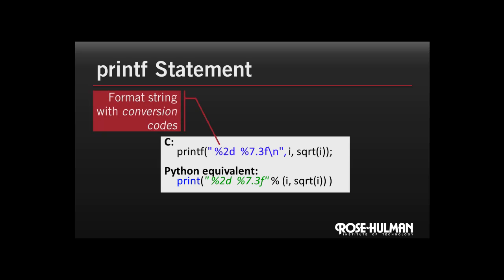Inside that format string, we have conversion codes. So this says I want a two character integer. And then the second conversion code, starting with the next percent sign up to the f, says I want a seven character space to hold a floating point number, and I want three characters after the decimal point.